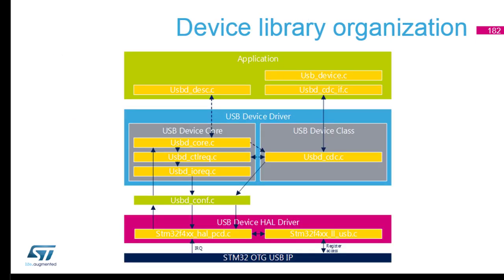Now the device library organization — you can have a look in your Atollic project at the same time. At the lower level we have the USB IP, which is the hardware registers. To access them we use stm32hxx_ll_usb.c — this file accesses the registers and is really the lowest level in the stack. You can directly use it if you want to reprogram the whole stack yourself, but it's a huge amount of work.